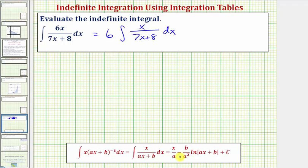Now we'll identify the values of A and B. Notice A would be seven, and B would be eight. So if we know A is equal to seven and B is equal to eight, we can go ahead and apply our integration formula.